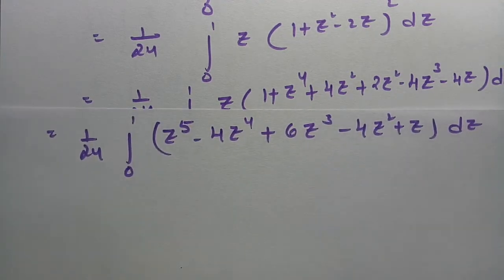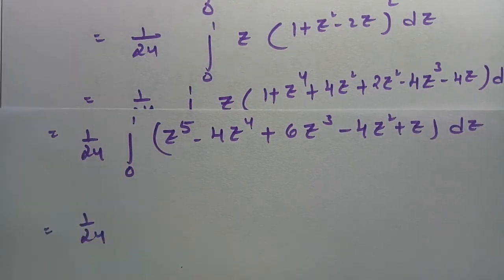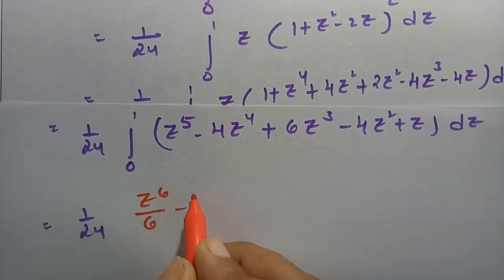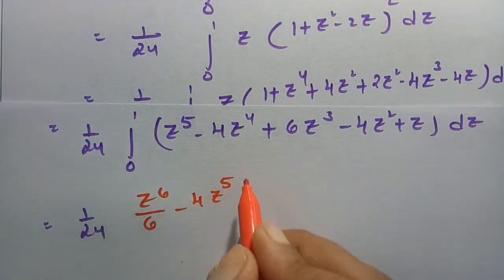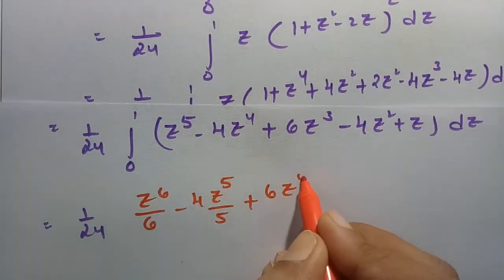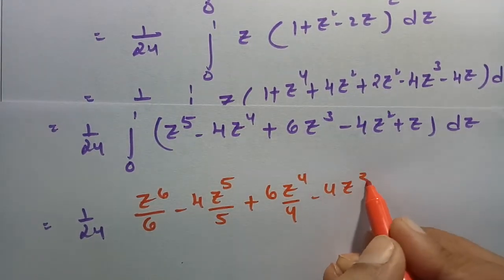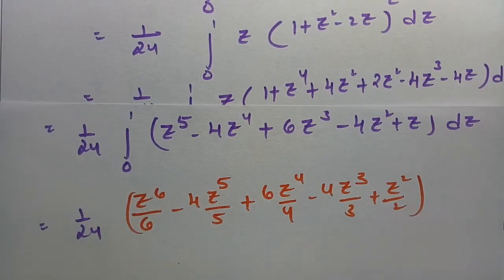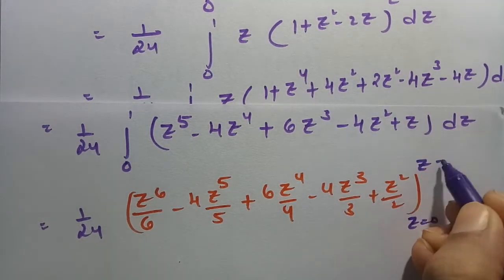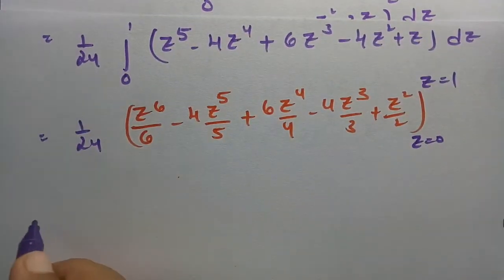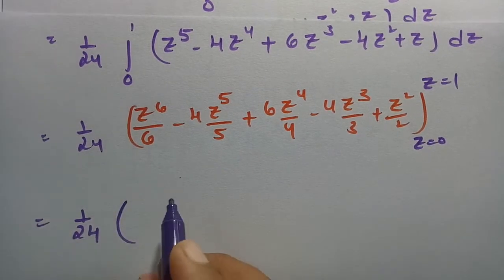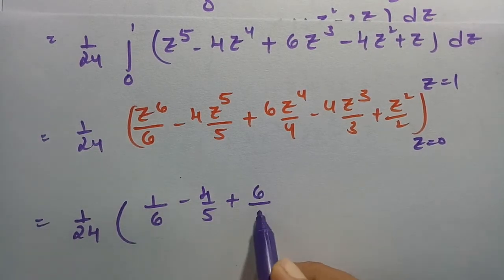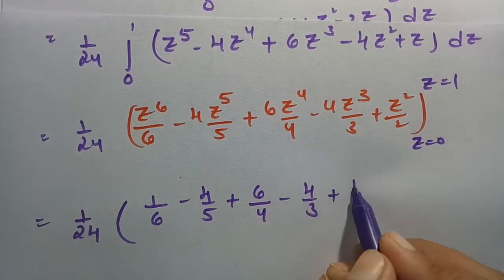Now integrating with respect to z: this is 1/24 times [z to the power 6 by 6 minus 4 times z to the power 5 by 5 plus 6 times z to the power 4 by 4 minus 4 times z cubed by 3 plus z squared by 2], between the limits z = 0 to z = 1.